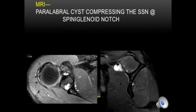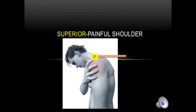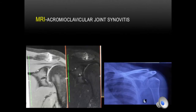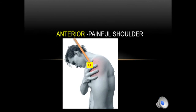Compression of the suprascapular nerve causes shoulder pain and weakness of the infraspinatus. If the pain is more superior and the patient localizes it to the AC joint, an MRI or X-ray sometimes shows effusion due to AC synovitis — that is the cause of pain coming from the AC joint. Anterior painful shoulder is very easy to diagnose since it is typically because of a supraspinatus structure.